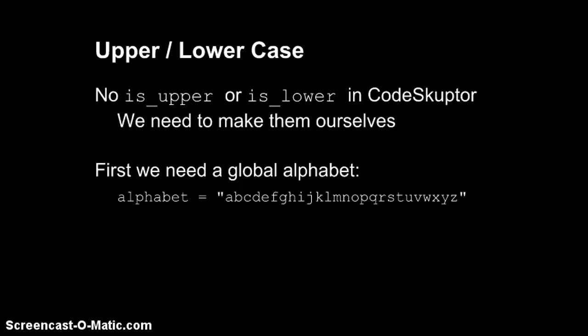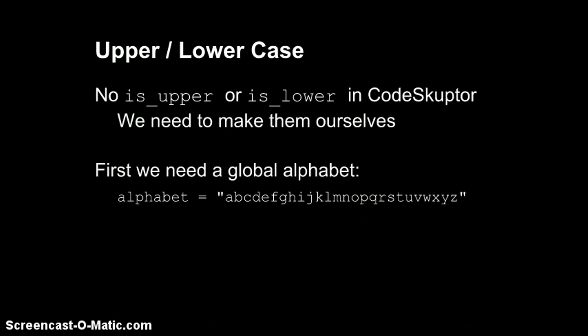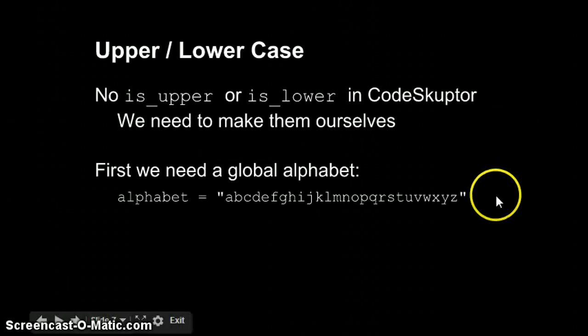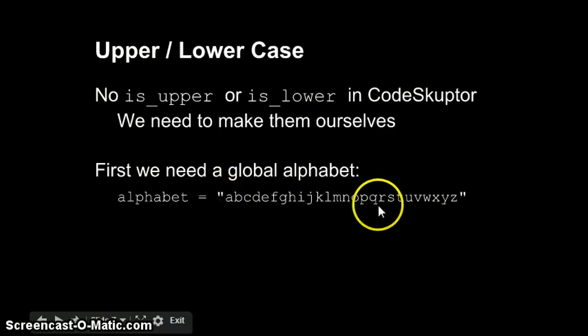CodeSculptor provides no way to determine the case of a letter, so we need to make one. We need a global string to hold the alphabet. That's right here. Notice it's all lowercase. Doesn't matter, it could be lower or upper or a mix. We'll see why in a second.